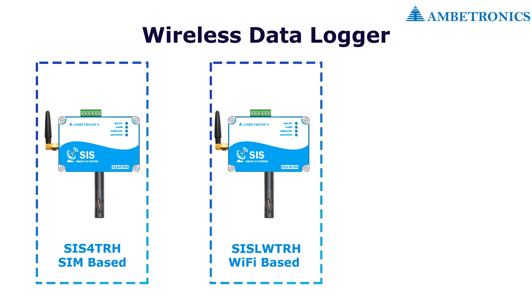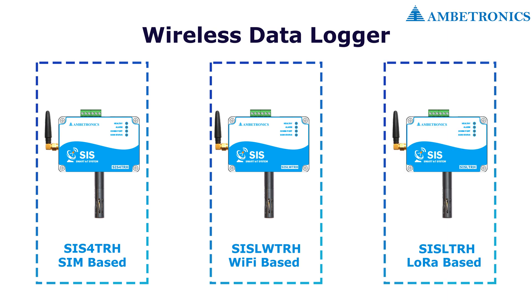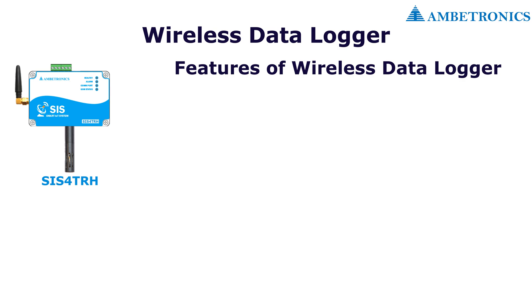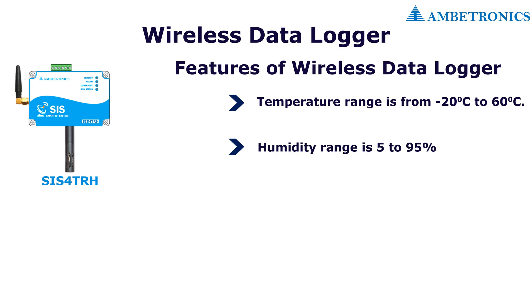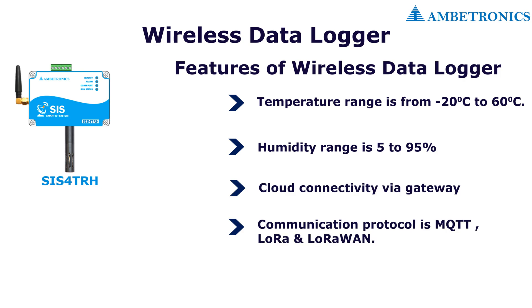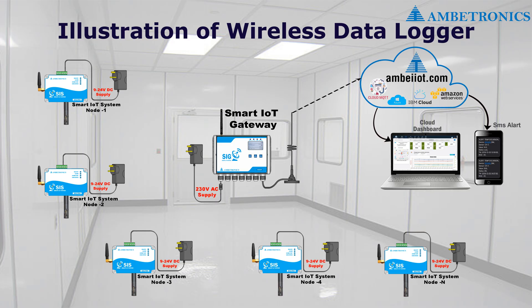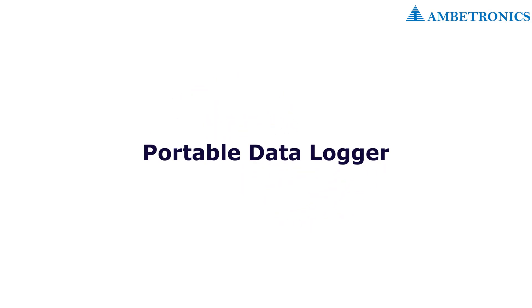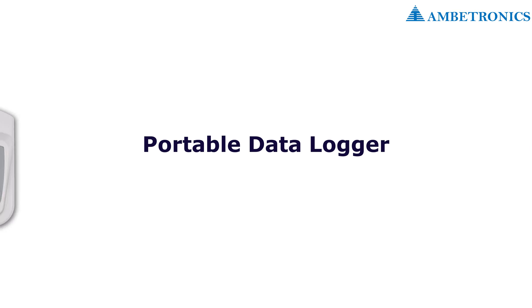In wireless data loggers, we have three models: Smart IoT System SIM-based SIS for TRH, Wi-Fi based SIS-LW TRH, and LoRa-based SIS-L TRH. Features of wireless data loggers include temperature range from minus 20°C to 60°C, humidity range of 5 to 95 percent, cloud connectivity via gateway, and communication protocol MQTT, LoRa, and LoRa WAN.